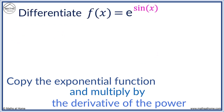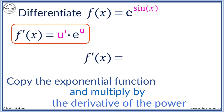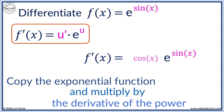Here, we differentiate e to the sin x. We copy e to the sin of x. Now, we differentiate sin x to get cos x. Our rule for differentiating exponentials always works, provided that we know how to differentiate the function that is the exponential's power.